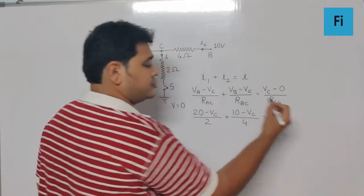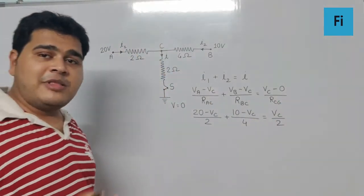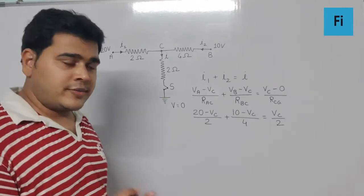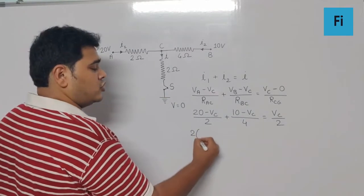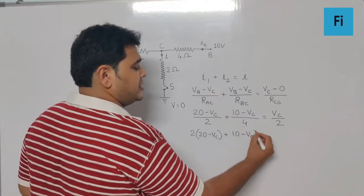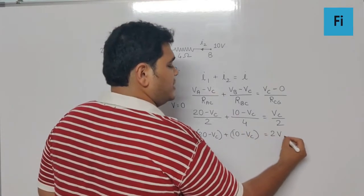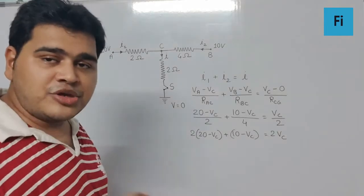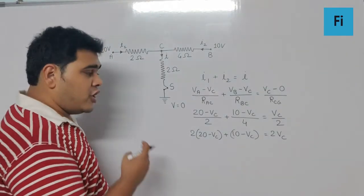So now if I multiply this by 4 throughout, I get 2 times 20 minus VC plus 10 minus VC is equal to 2 VC. I multiply the entire equation by 4.